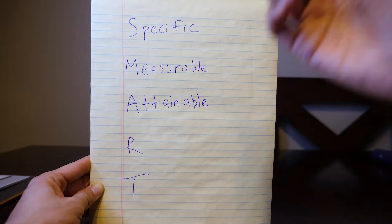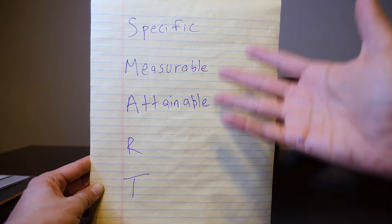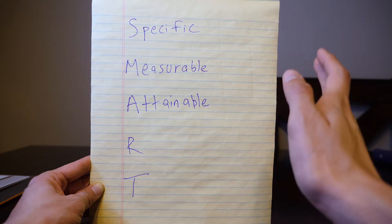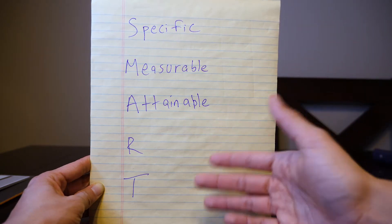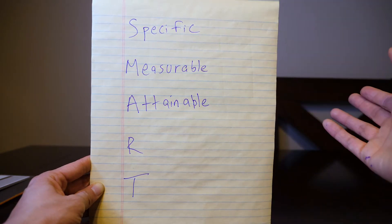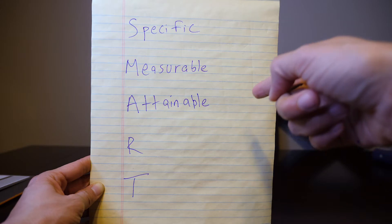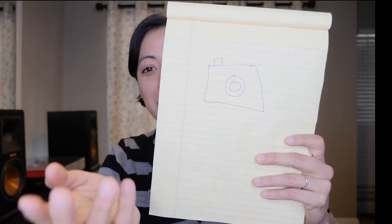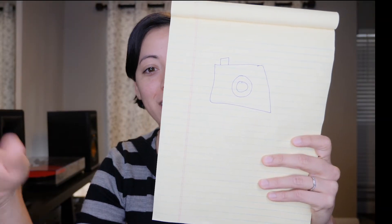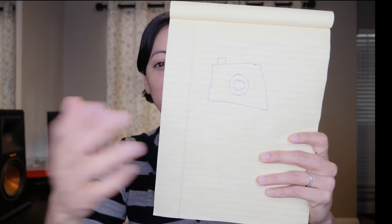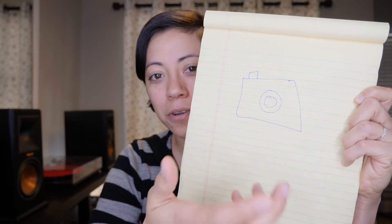A is for attainable. Do you have the resources? Do you have the right tools and materials to accomplish the goal? My camera, laptop, internet connection, editing software — stuff like that. I have the basics to create a YouTube video.